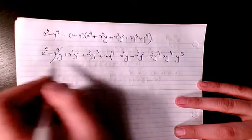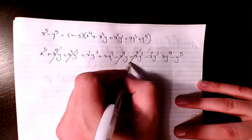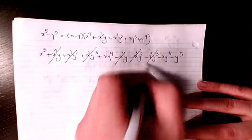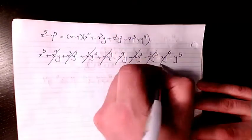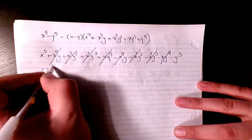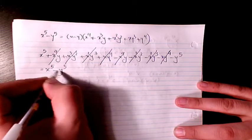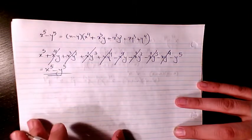So this one and this one cancel out, this one and this one cancel out, this one and this one cancel out, this one and this one cancel out. So it will be x to the power of 5 minus y to the power of 5. So that will be the answer.